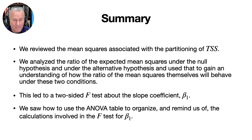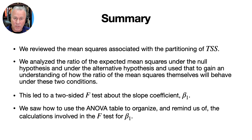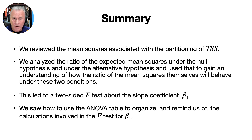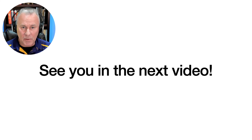To summarize: we reviewed the mean squares associated with the partitioning of the total sum of squares of the response. We analyzed the ratio of the expected mean squares under the null and alternative hypotheses, and used that to understand the behavior of the ratio of the mean squares. This led to a two-sided F-test about the slope coefficient beta1. And finally, we saw how to use the ANOVA table to organize the calculations involved in the F-test for beta1.